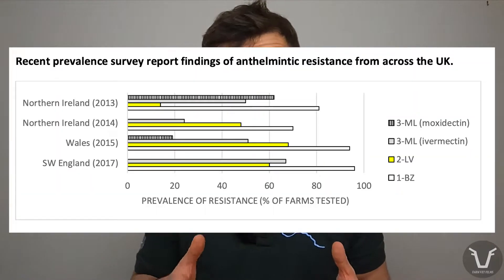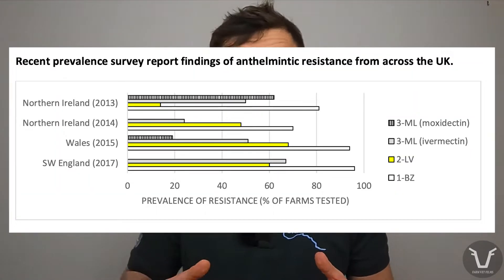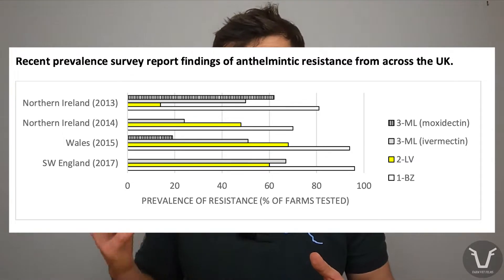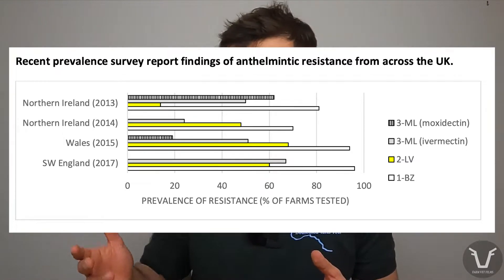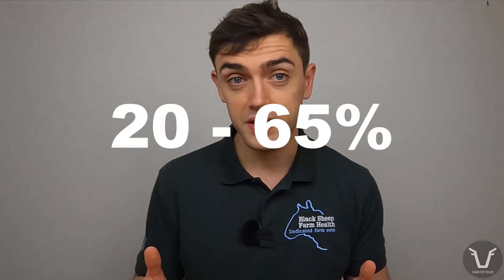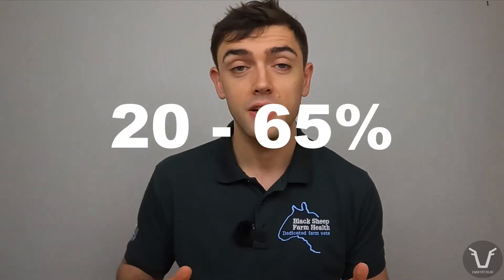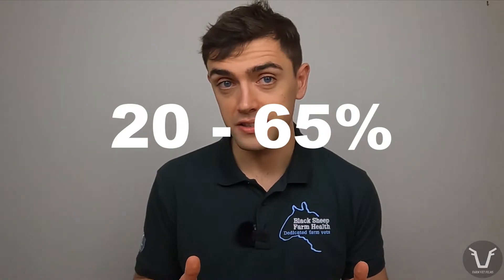When we're talking about resistance, it's also pretty common for the 3MLs. When we look at the data from different places it does vary. It doesn't tend to be as widespread as white wormer resistance, and it's probably on a par with yellow wormer resistance — somewhere between 20 to 65 percent of farms having clear wormer resistance. That's probably related to the fact that white wormers are older, so worms have had more of a chance to be exposed to them — not some inherent superiority of the yellow or clear products.